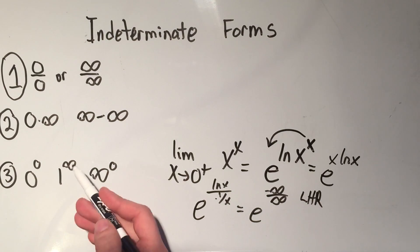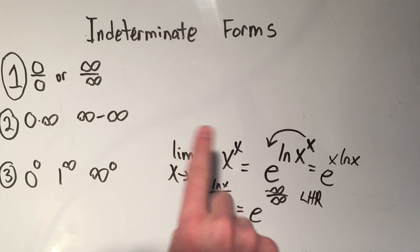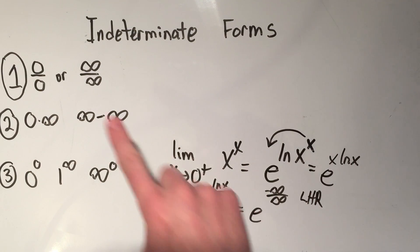One to the infinity and infinity to the zero don't come up as much, but they're the same thing. You're going to do this e and ln trick, and then bring down the power, you'll be in stage two, and then write it like a fraction and you'll be in stage one.